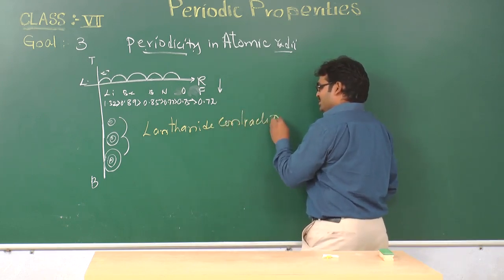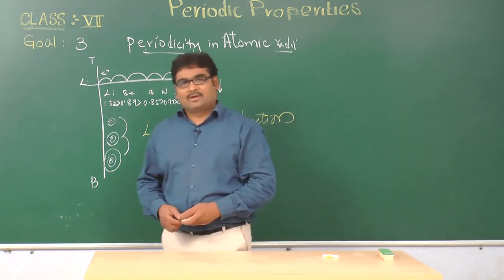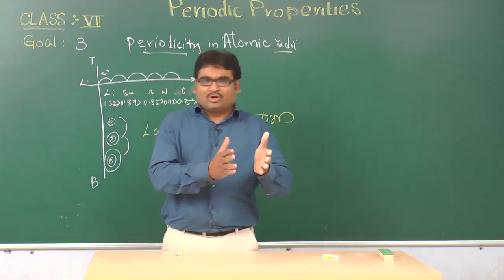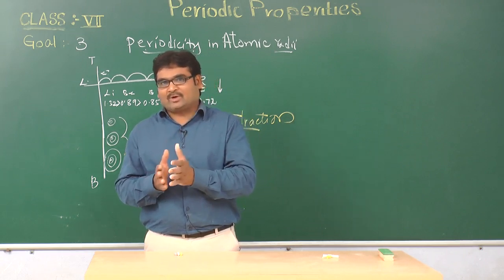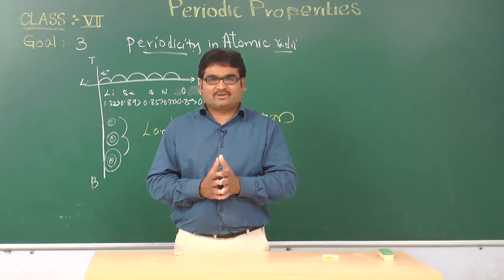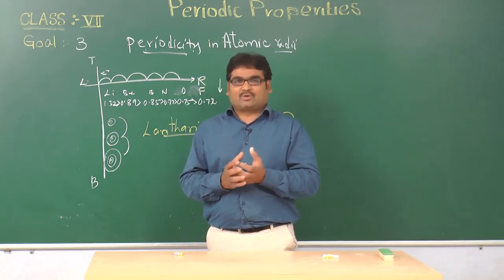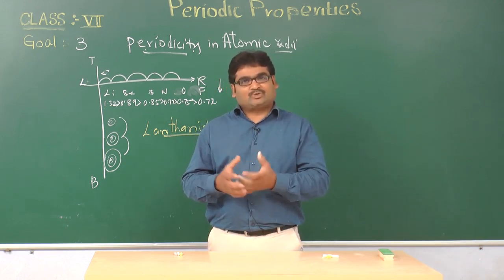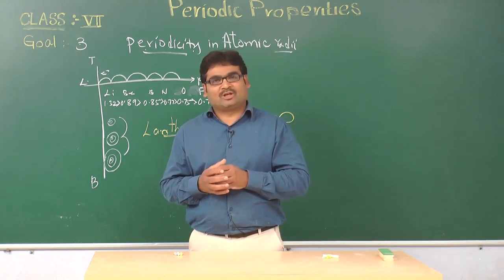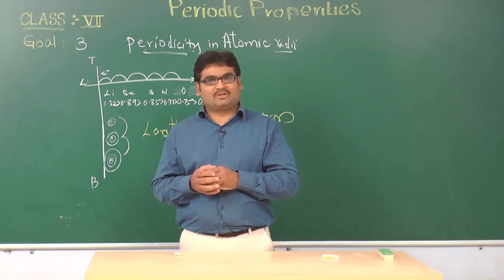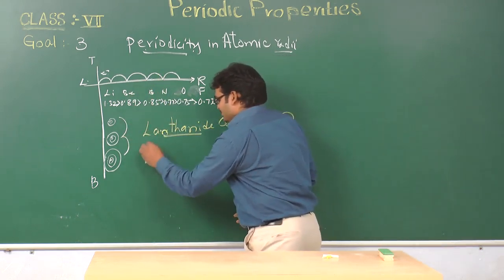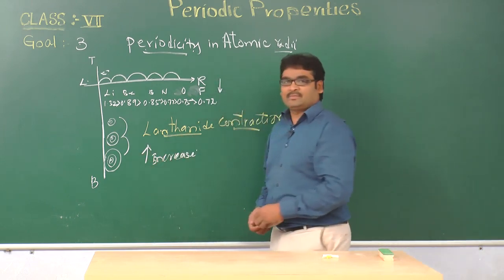What is this lanthanide contraction? The inner electrons in the atom are supposed to be screening the valence electrons from the nuclear charge. But the inner electrons fail to effectively screen the valence electrons from the nuclear charge. As a result, the valence electrons are pulled closer to the nucleus. As we expect the size to be increasing, but due to the pull of the nuclear charge, the size decreases — this is known as the lanthanide contraction. So as we move down the group from top to bottom, the atomic size increases.